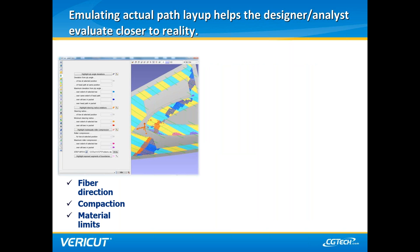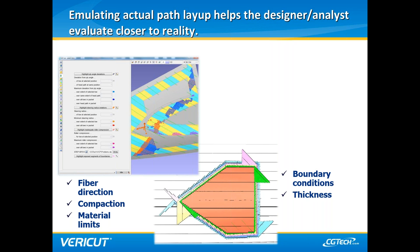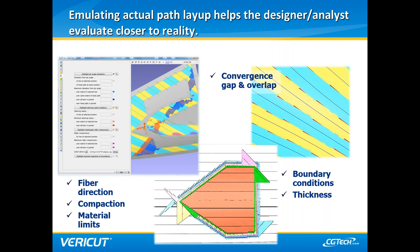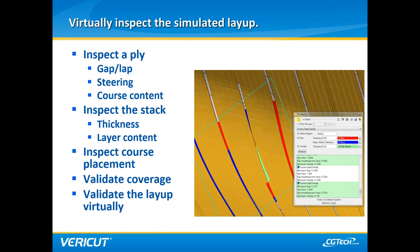VCP not only allows you to program the head path, course information, and course linking strategies — it also allows you to verify several key manufacturing parameters as they would appear on the actual part. Parameters like fiber orientation, roller compaction, material steering, boundary condition, and convergence zones can all be measured and analyzed. Further, VCS can be used to verify several aspects of the entire laminate layout, and reports can be generated to quickly share simulation information on produceability with management, design engineers, and more.